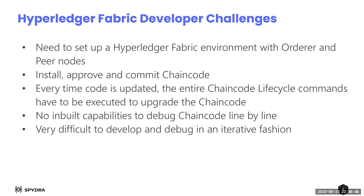First, what are the challenges while developing chain code for Hyperledger Fabric? The chain code literally runs within the Fabric environment, so the first thing you need is a Fabric environment itself — you need to deploy the peers, orderers, and set up the entire Hyperledger Fabric network. Of course there's a default test network and scripts available, but that's just a prerequisite.